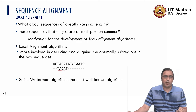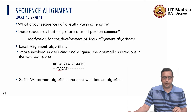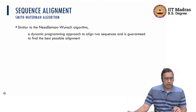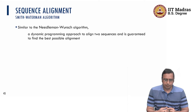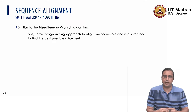The Smith-Waterman algorithm is one of the well-known algorithms to solve this problem. It is similar to the Needleman-Wunsch algorithm — it is also a dynamic programming approach which tries to align two sequences, and it also guarantees finding the best possible alignment.